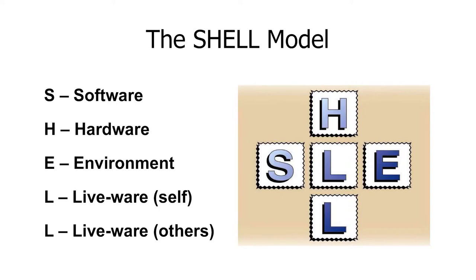Let's begin with the SHELL system. The SHELL model is a tool that defines the whole scope of an aviation system in four separate elements, which all interact with each other. The acronym SHELL stands for software, hardware, environment, liveware, and liveware again. Yes, it's that important that we mention it twice.